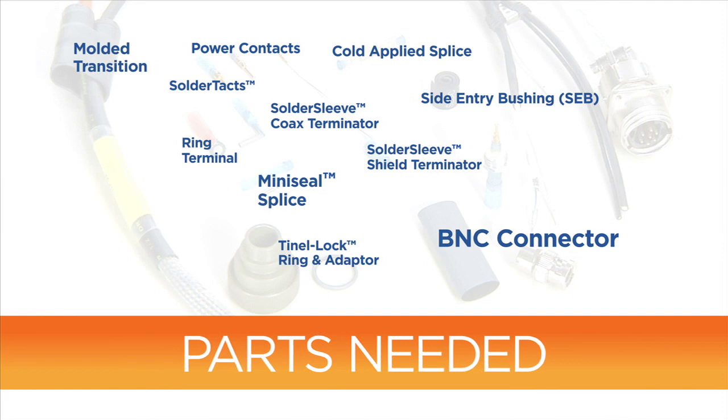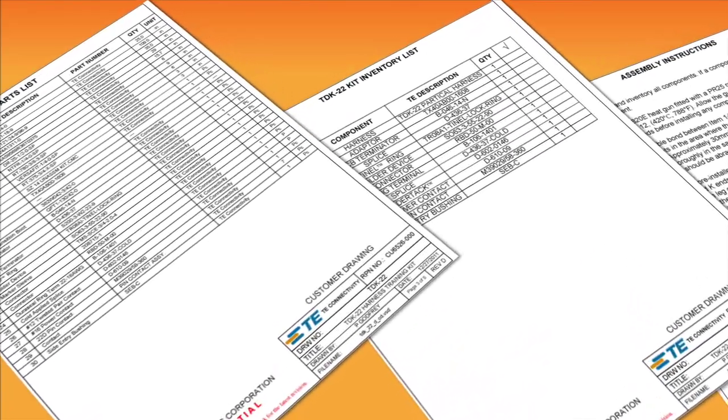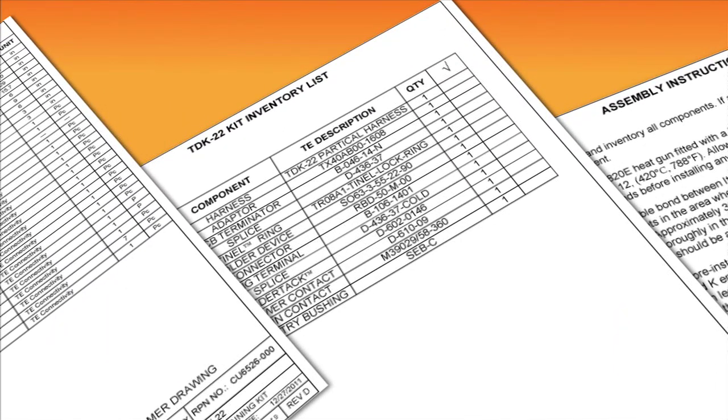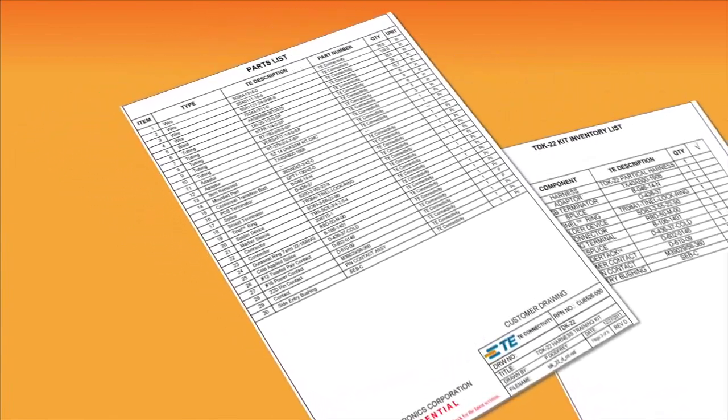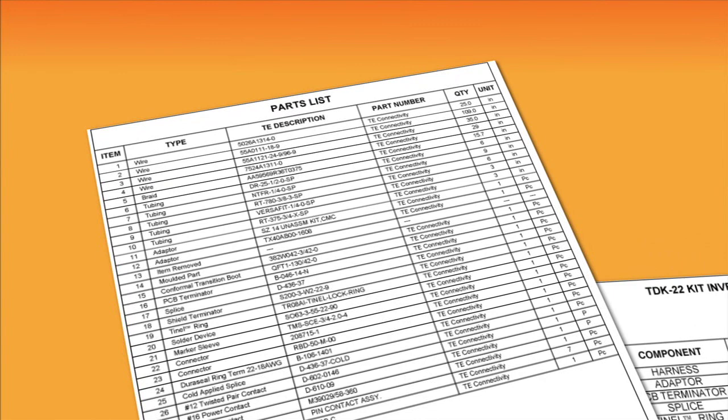To make sure none of the parts are missing, open the harness kit and inventory all components. If a component is missing, ask the trainer for a replacement. A complete list of all of the components can be found in the TDK22 kit inventory list. The TDK22 harness kit contains 30 different items. You can review these on the parts list and refer back to the list during assembly.